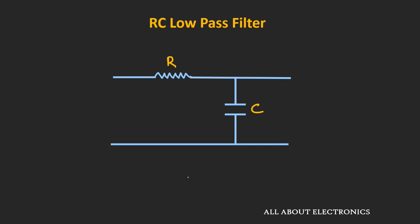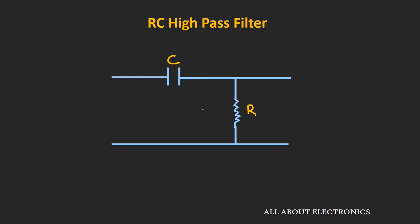In the last video, we had seen that by connecting resistor and capacitor in a certain fashion, we can design the low pass filter. Now just by interchanging the position of the capacitor and resistor, we can convert this low pass filter into the high pass filter. With this high pass filter, we apply an input signal at one end and take the output across the resistor.